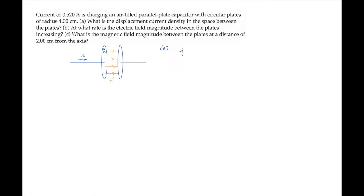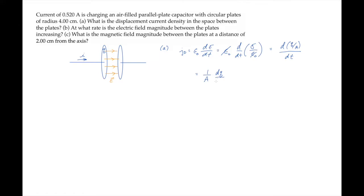We recall the displacement current density is ε₀ times the time derivative of the electric field between the plates. The electric field between the plates of a parallel plate capacitor is σ, the charge density, divided by ε₀. So we can cancel the ε₀s and rewrite σ, the charge density, as the charge Q on the plate divided by the plate area A. The plate area is constant, so we have 1 over A times the time derivative of the charge Q on the plate. That's the current I.